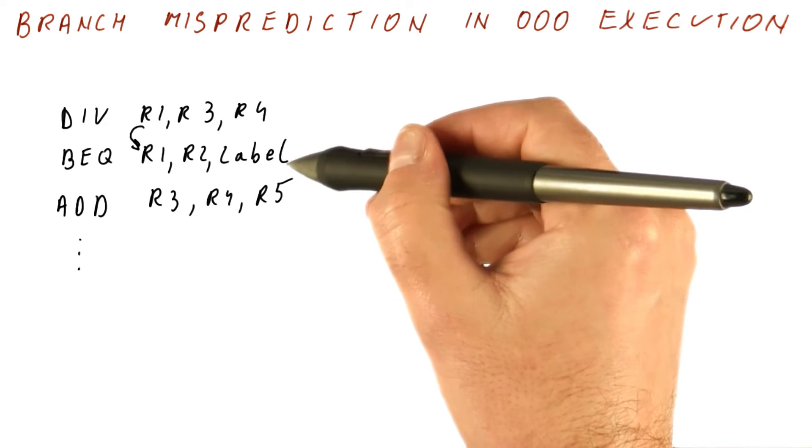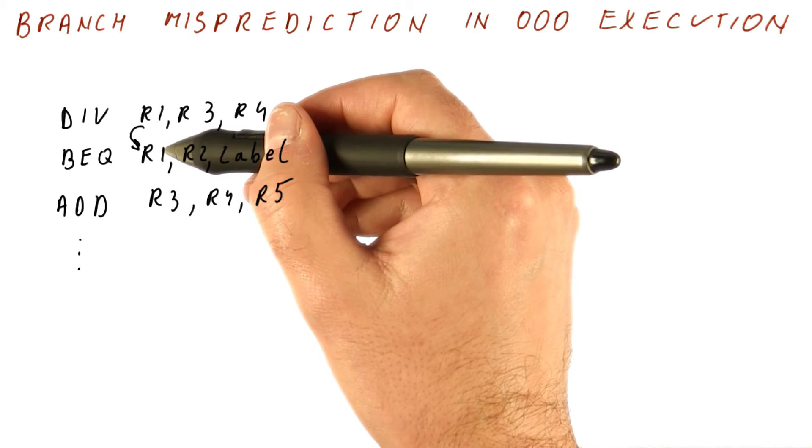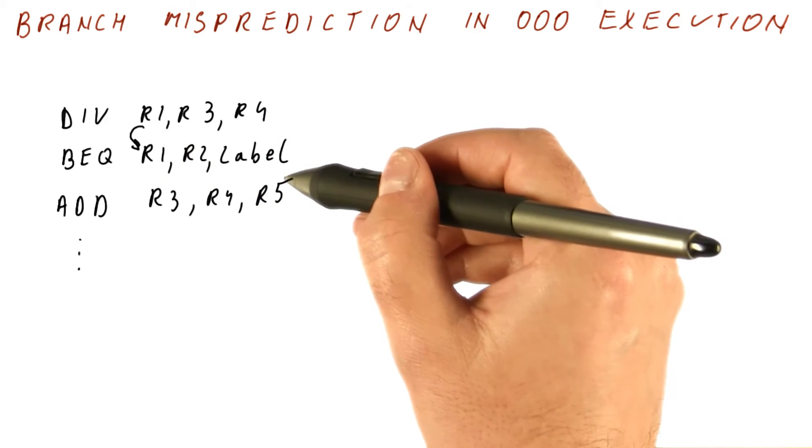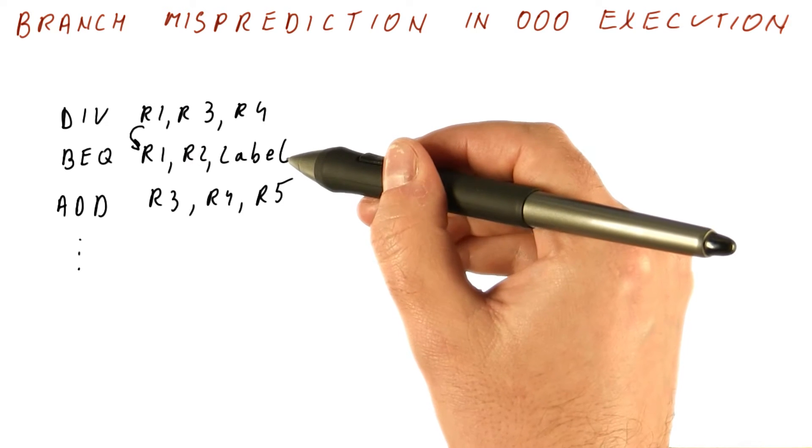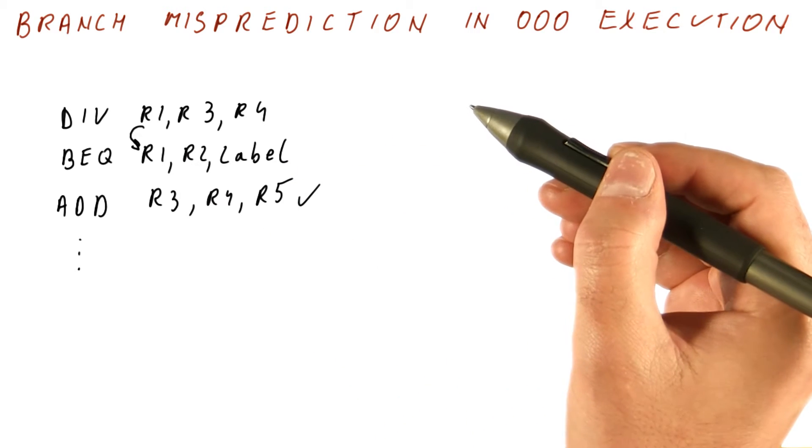So this branch can be predicted, but it can take a long time to realize that it's been mispredicted. Meanwhile, we have fetched this instruction because the branch should have been taken. We have fetched this instruction, and this instruction is already done.